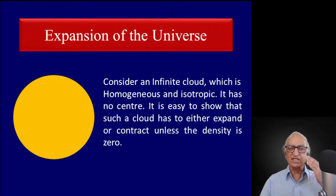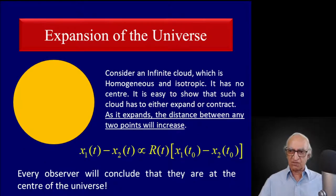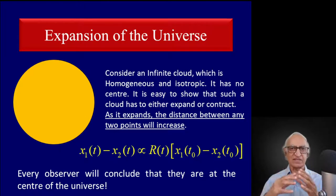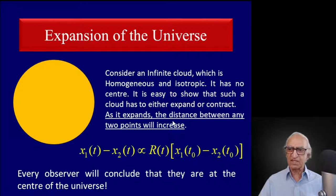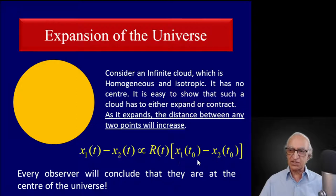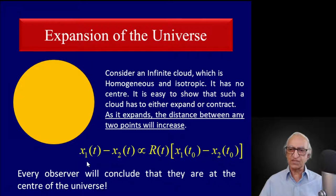As this infinite cloud — our model of our universe — expands, the distance between any two points x₁ and x₂ will change with time. At initial time t₀, the distance was |x₁(t₀) − x₂(t₀)|. At a later time t, it increases by the factor R(t), and the new distance is |x₁(t) − x₂(t)|. This equation is valid according to every observer in the universe. Every observer will conclude they are in the center of the universe because it is an infinite universe where every point is a center.